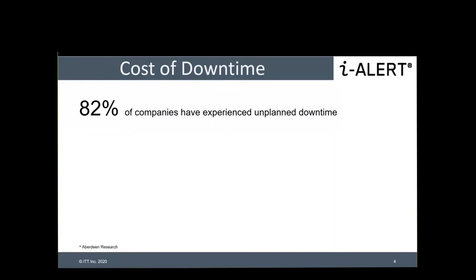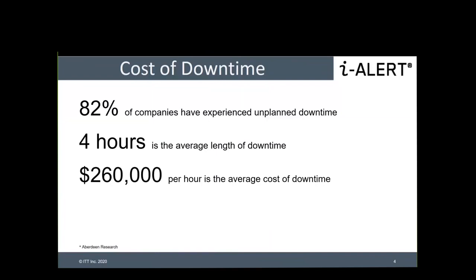We're putting through some industry-published data. There are quite a few different sources with slight variants in the numbers, but in general they're pretty close to what you're seeing here. 82% of companies surveyed have experienced unplanned downtime at some time throughout the plant. When these events occur, on average they last four hours — this refers to a whole plant shutdown. For example, power stations can suffer downtime for days when an unexpected event occurs, and they're usually published in local newspapers.